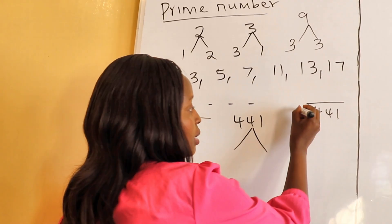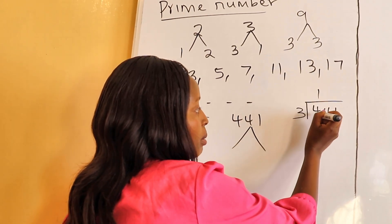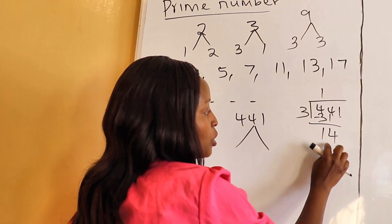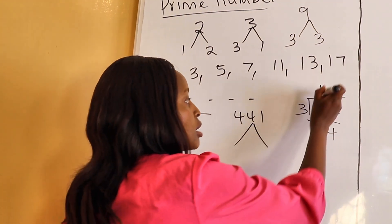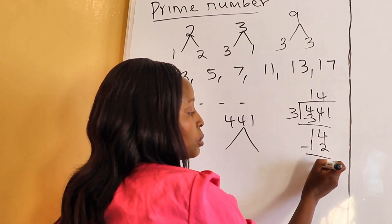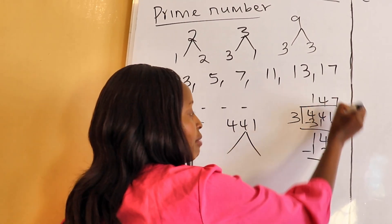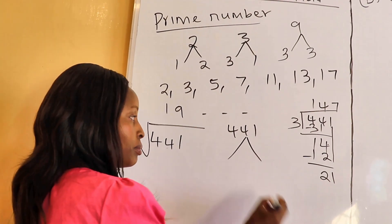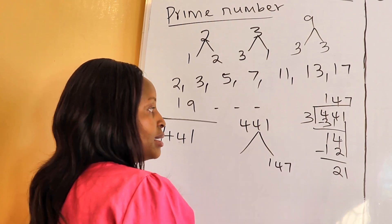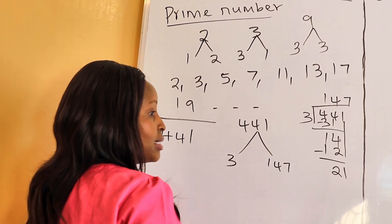Let's try three: 4 divided by 3 is 1, take away 3 leaves 1; drop 4 — 14 divided by 3 is 4, because 12; take away, drop 1 — 21 divided by 3 is 7. The quotient is written on the right-hand side, and the prime number divisor is also written on the right-hand side.